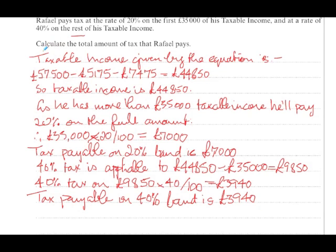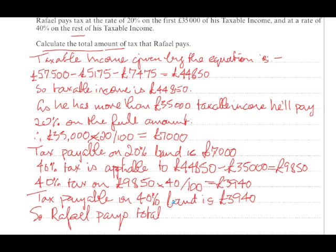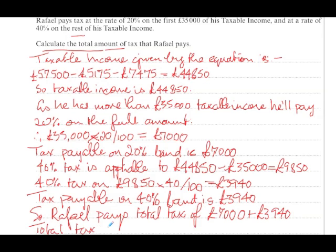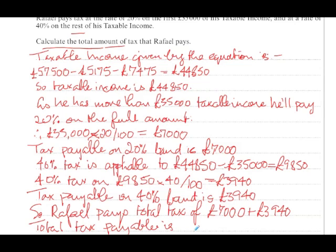Remember it says calculate the total amount of tax. So Raphael pays total tax of £7,000 plus £3,940. Total tax payable is therefore £10,940.